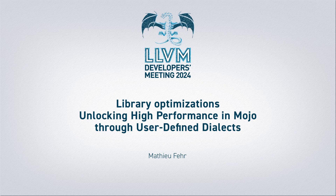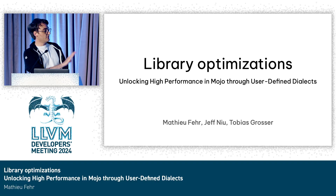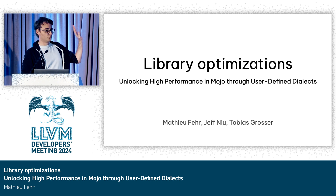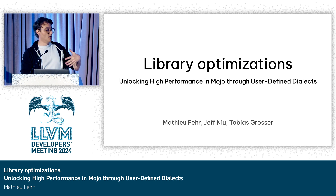Hi everyone, I'm Mathieu, and today I'm going to present what I've been doing as an internship at Modular, which I'll call library optimization — another way to get high performance in Mojo. I should preface this by saying this is something we've been working on in the Mojo language. It is not available yet, but it is something we've been trying out internally as an experimentation on what we can do with Mojo currently.